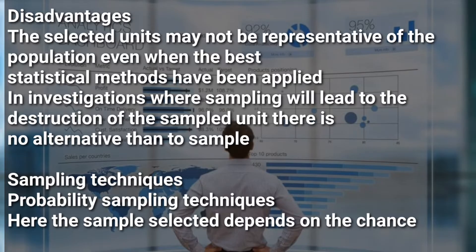Now let's look at the disadvantages of sampling. The disadvantage of sampling is that the selected units may not be representative of the population, even when the best statistical methods have been applied. Also, in investigations where sampling leads to destruction of the sample unit, there is no alternative but to sample. For example, instead of studying the whole of Uganda, you decide to study only Kampala as your sample — but Kampala may not represent the whole of Uganda and may not give you the information you want, leading to sampling errors.